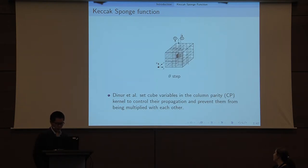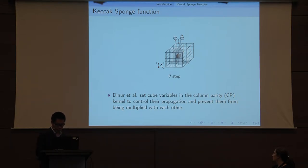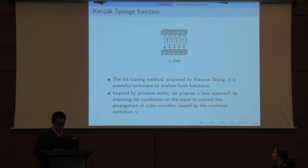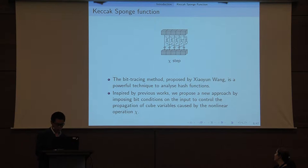The new sent cube variables in the column parity kernel — this is a very important property for the Keccak sponge function. They use this property to control the propagation of cube variables and prevent them from being multiplied with each other in the first round. But in our work, we will see the propagation in the second round. The bit tracing method, proposed by Xiaoyun Wang, is a very powerful technique to analyze hash functions. Inspired by previous works, we propose a new approach by imposing bit conditions on the inputs to control the propagation of cube variables caused by the non-linear operation CHI.